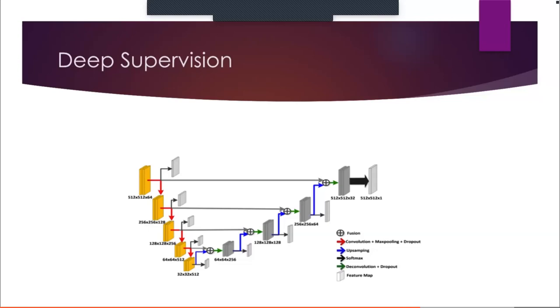We have briefly experimented with deep supervision in our project by using output from the last 2 or 3 layers of the decoder, upsampling them to match the input size, and comparing them with the same losses as the original output.